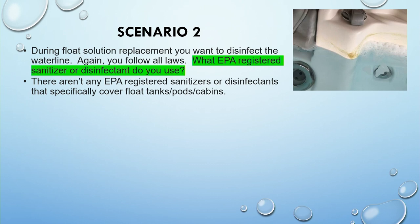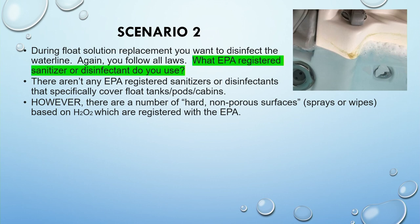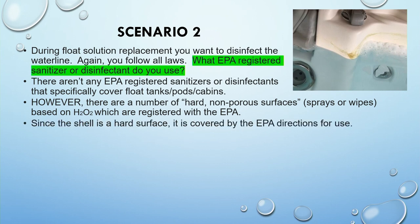Another scenario: during float solution replacement, you want to disinfect the water line. What EPA-registered sanitizer or disinfectant do you use? There aren't any EPA-registered sanitizers that specifically cover float tanks. However, there are a number of hard, non-porous surface sanitizers, sprays, and wipes that are based on hydrogen peroxide and are registered with the EPA and approved for that use. Since your float tanks are a hard, non-porous surface, it's covered by those EPA directions for use. The preferred formulas are typically alcohol or hydrogen peroxide wipes, but do not use sprays with quats because these are inactivated by high levels of salts.